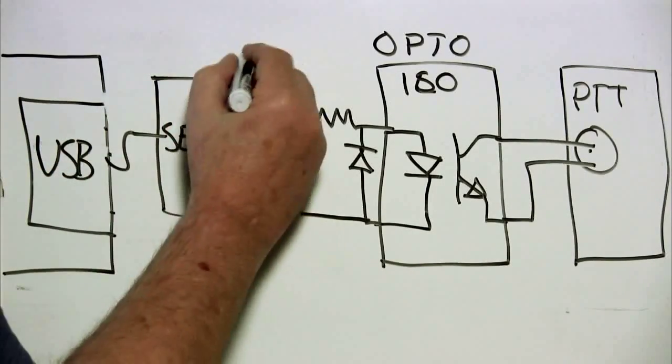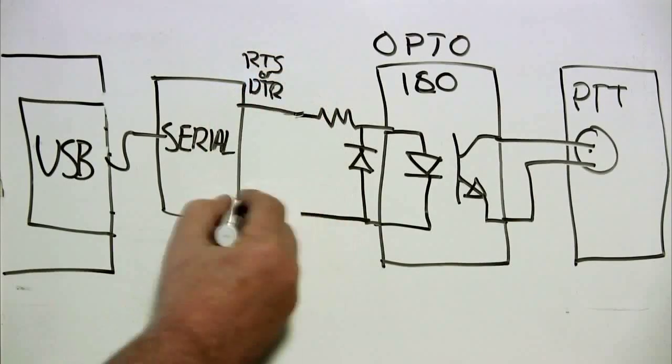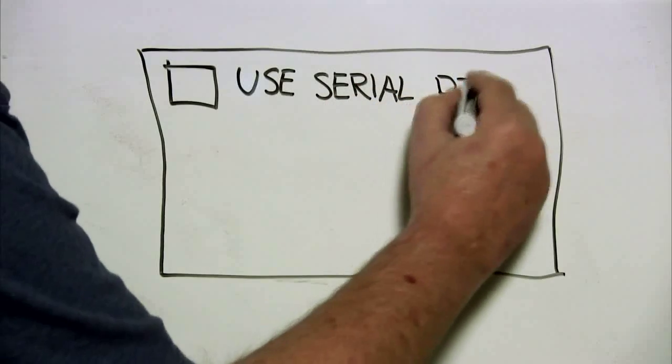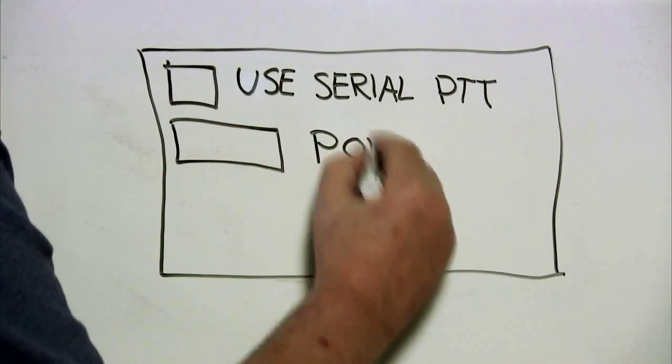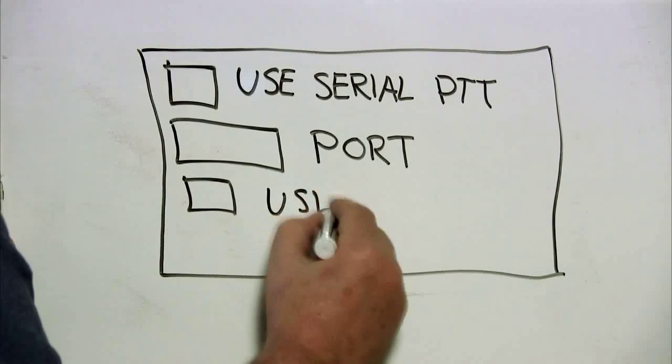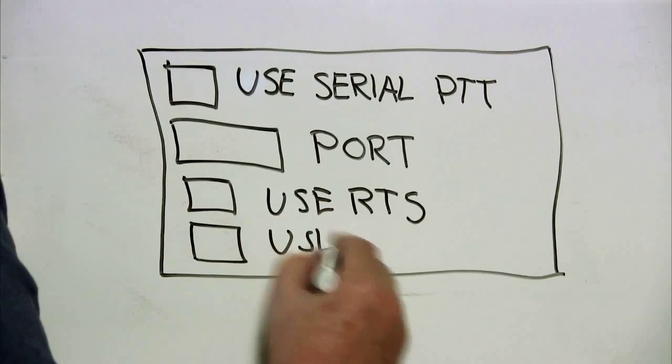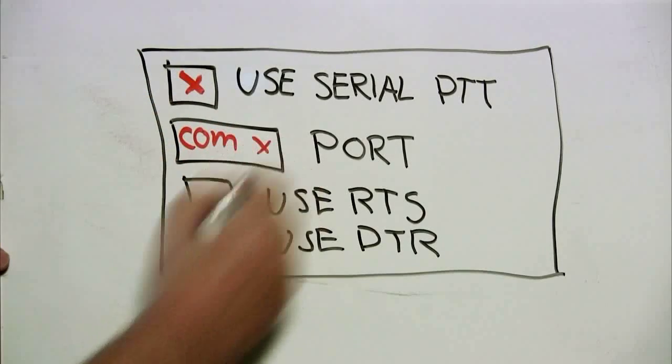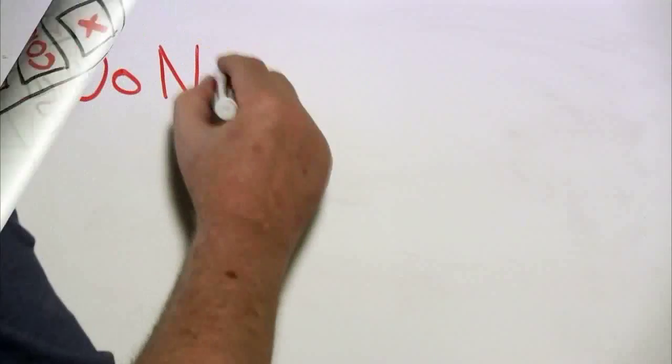Most computers don't have a serial port anymore, so you can use an external USB to serial port dongle. When using the serial port to generate your push to talk, you typically have to go into the configuration setup in your software for your digital program and tell it to use the serial port for push to talk, choose the COM port that you're using, and then select either RTS or DTR.